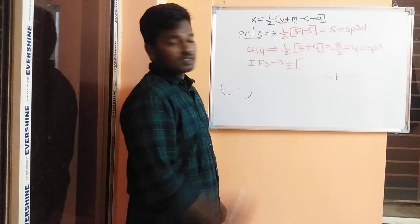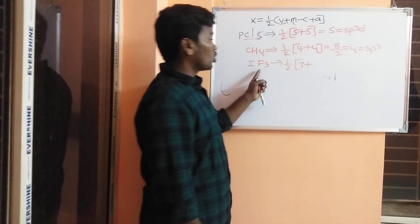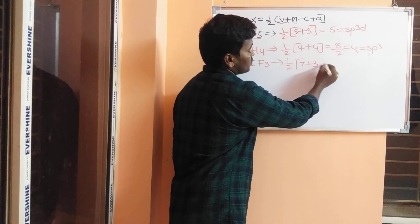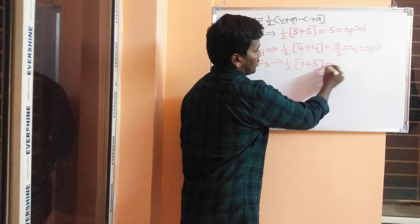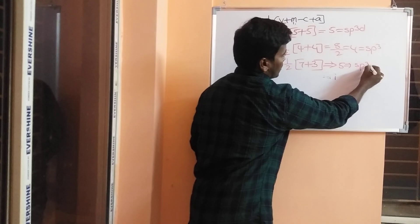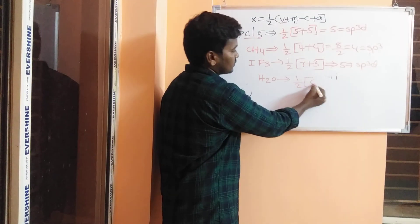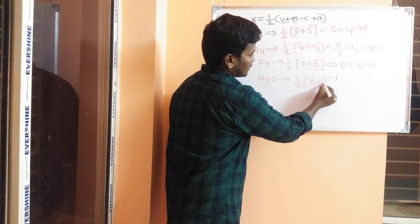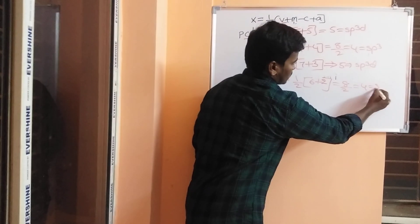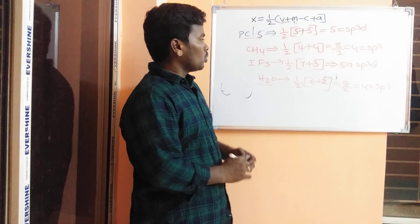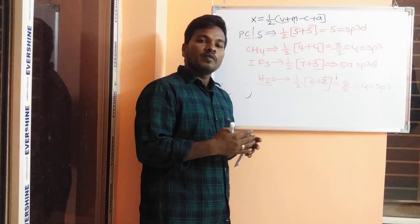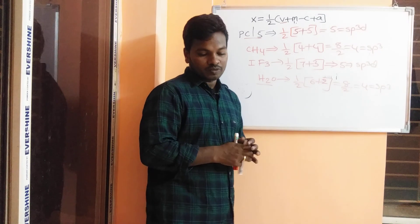Next: IF₃. The central atom is iodine with 7 valence electrons (V equals 7). Fluorine is monovalent and there are 3 fluorines (M equals 3). No charge on cation or anion. One by two of (7 + 3) equals 5, giving sp³d hybridization. Finally, H₂O: central atom oxygen has 6 valence electrons (V equals 6), with 2 monovalent hydrogen atoms (M equals 2). One by two of (6 + 2) equals 4, so H₂O has sp³ hybridization. Thank you for watching. In the next video I will make another method to find out hybridization.